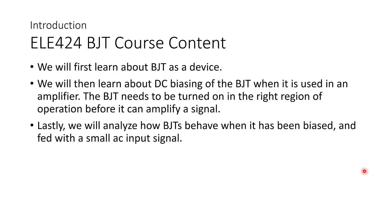In ELE 424 BJT course content, we will first learn about the BJT as a device itself, then learn about DC biasing of the BJT. When used in an amplifier, the BJT needs to be turned on in the right region of operation before it can amplify a signal. Finally, we will analyse how BJTs behave when biased through DC biasing and then fed with a small AC input signal — this is the small signal analysis.